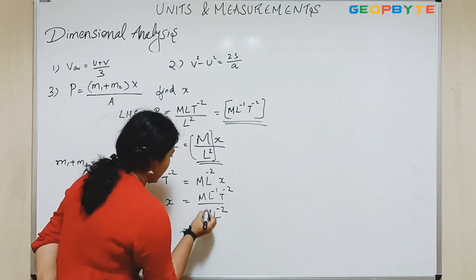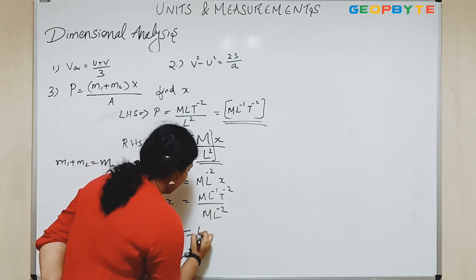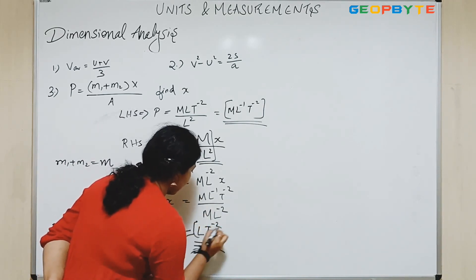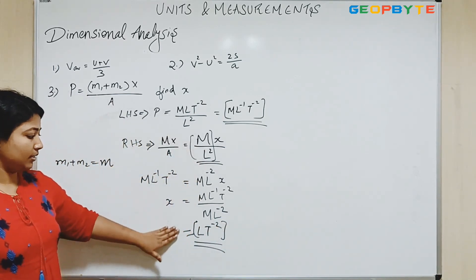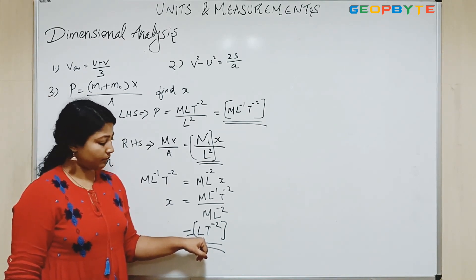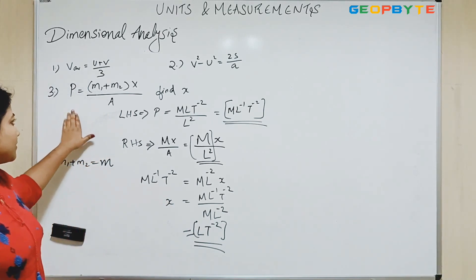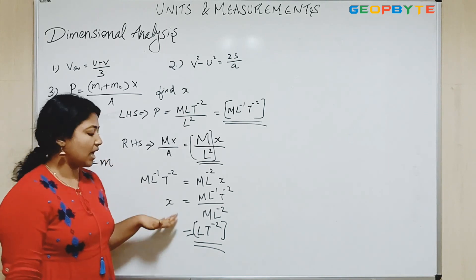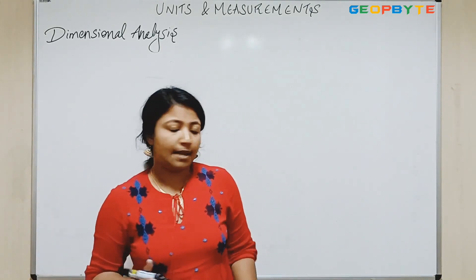So X is L T to the power minus 2, which can be acceleration, because that is the dimensional equation of acceleration. This is how you solve problems. Probably for entrance exams or something, people may ask questions like this. Now we will see another example.